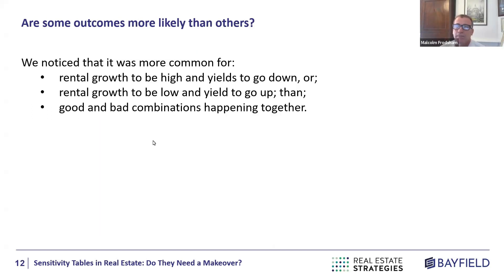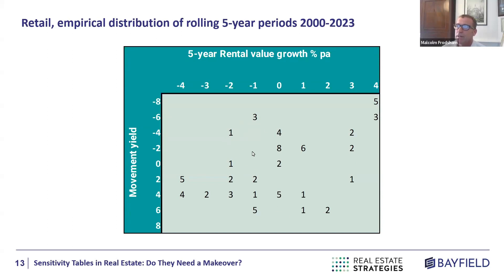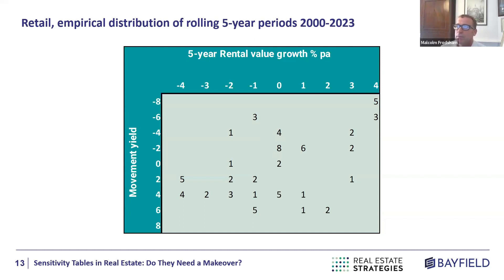Going back to our empirical data, some outcomes were more likely than others. Looking at counts of different observations for retail back to the year 2000 — rental growth from minus four to plus four, and yield movement from minus eight to plus eight — the most common observations are around the middle, around the sixes and eights. And there's a line through the data suggesting a relationship between rental growth outcomes and yield movement outcomes.